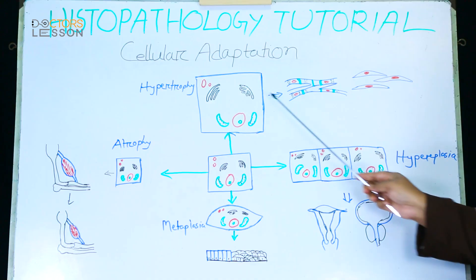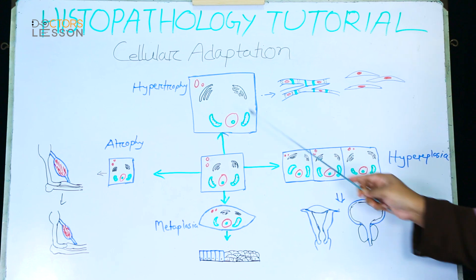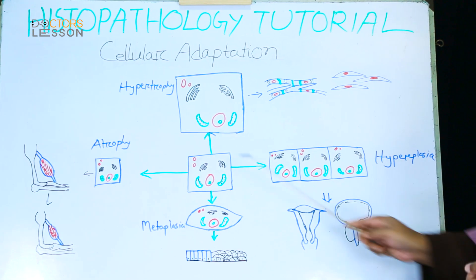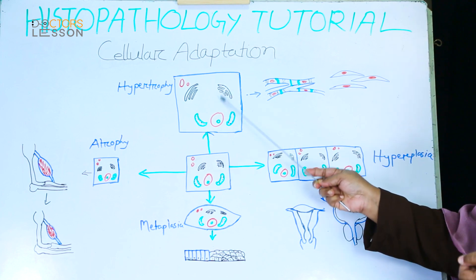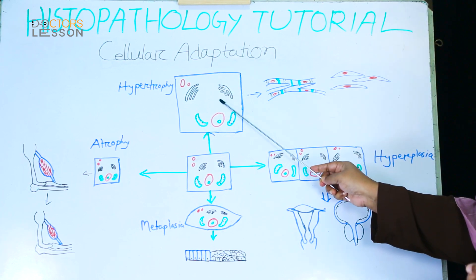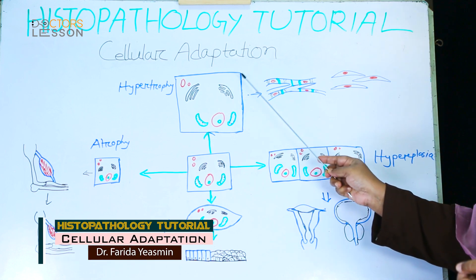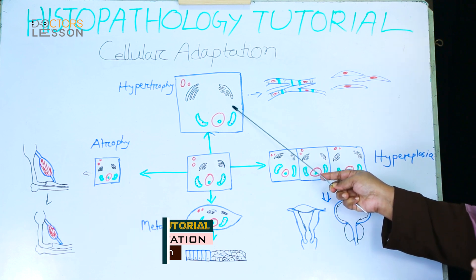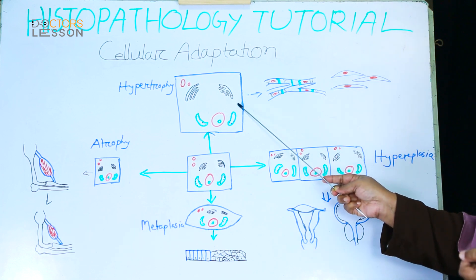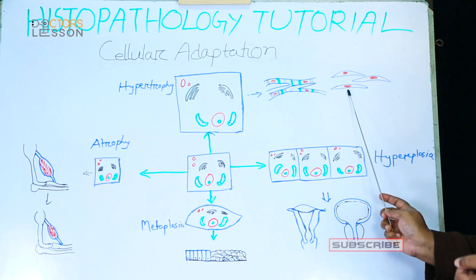There are four distinct forms of cellular adaptation: hypertrophy, hyperplasia, atrophy, and metaplasia. I will first discuss hypertrophy. Hypertrophy refers to increased size of cells that results in increased size of an organ or tissue. This type of adaptive change is found in non-dividing cells — that is, cells which are not capable of mitotic division — such as neurons, cardiac muscle, and smooth muscle.